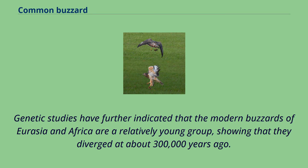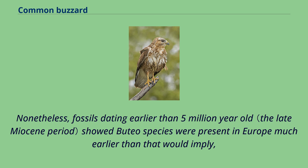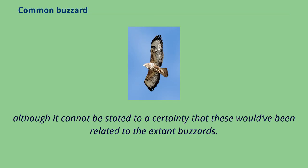Genetic studies have further indicated that the modern buzzards of Eurasia and Africa are a relatively young group, showing that they diverged at about 300,000 years ago. Nonetheless, fossils dating earlier than 5 million years old show Buteo species were present in Europe much earlier than that would imply, although it cannot be stated with certainty that these would have been related to the extant buzzards.